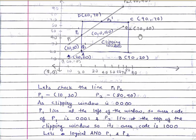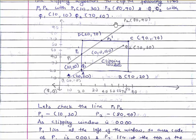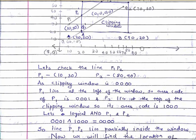Now let's check line P1P2. P1=(10,30) and P2=(80,90). The clipping window code is 0000. P1 lies to the left of the window — neither on top nor bottom nor on the right — so the region code of P1 is 0001 (top, bottom, right, left). P2 lies at the top of the clipping window — neither on the right nor left — so its region code is 1000.